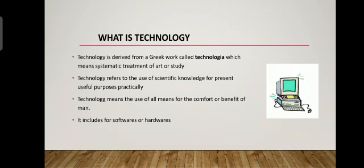What is technology? Technology is derived from a Greek word called technologia, which means systematic treatment of art or study. Technology refers to the use of scientific knowledge for practical and useful purposes. Technology means the use of all means for the comfort or benefit of man, and it includes software and hardware.